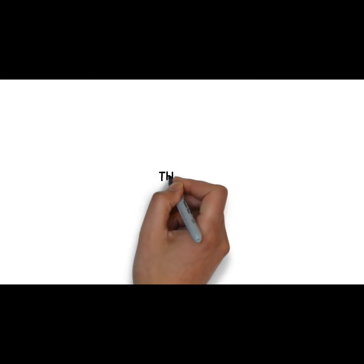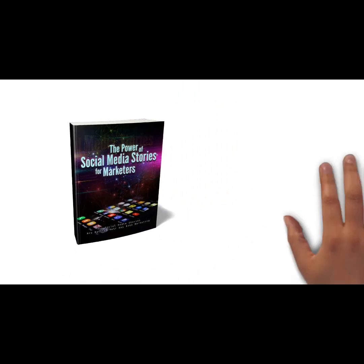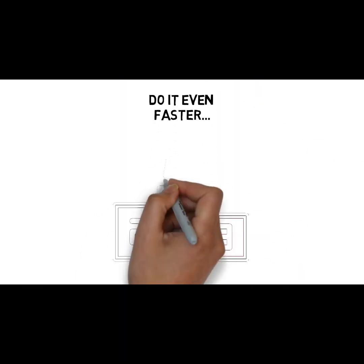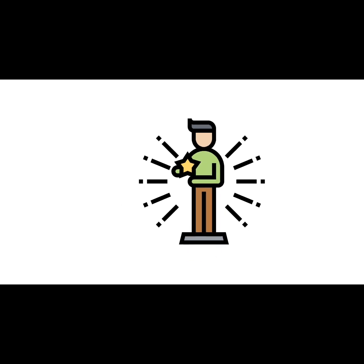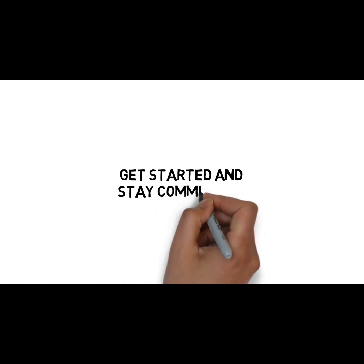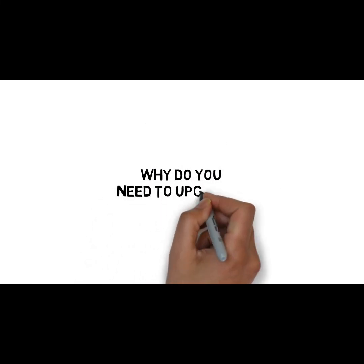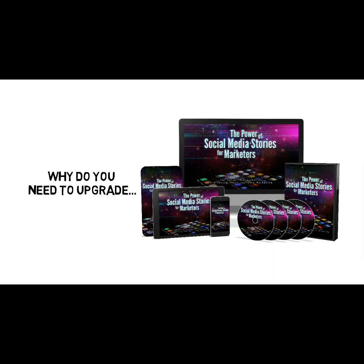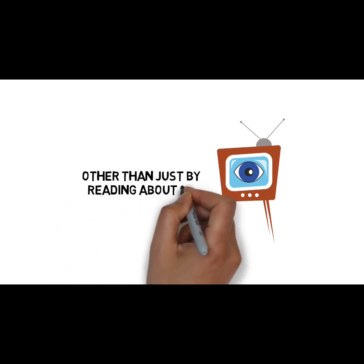First off, thanks so much for purchasing the guide that will teach you all the skills you need to benefit from the power of social media stories for marketers. If you follow the step-by-step guide, you will be heading straight to that goal. But what if you could do it even faster, and what if you could ensure that you get the absolute best results possible? For a limited time, you can get access to the video upgrade to the guide you just purchased at a very low price. This powerful upgrade will make it easier to get started and stay committed to your ultimate goal. Why do you need to upgrade? Did you know that most people learn a lot faster when they see something being done on video? That's because most people are visual learners.